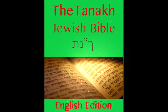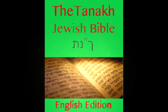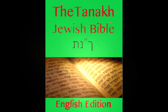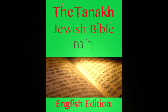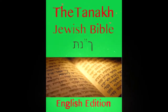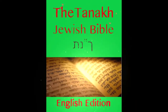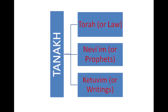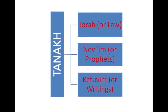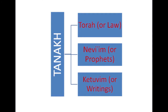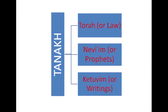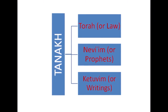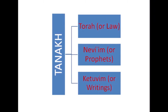The Hebrew Bible includes only the books known to Christians as the Old Testament. The Hebrew canon has three divisions: the Torah, or Law; the Nevi'im, or Prophets; and the Ketuvim, or Writings.